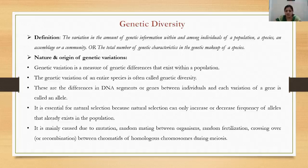Genetic variation is a measure of genetic differences that exist within a population. In a population, the gene makeup of a species may vary, and this makes up the genetic variations. The genetic variation of an entire species is often called genetic diversity.